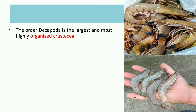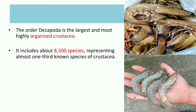The order Decapoda is the largest and most highly organized group of crustaceans. It includes about 8,500 species, representing almost one-third of all known species of crustaceans.